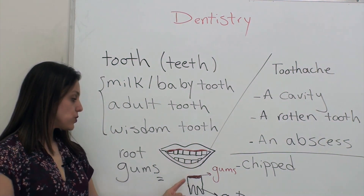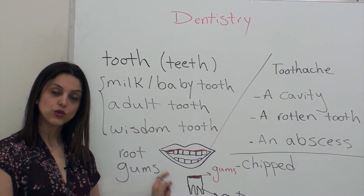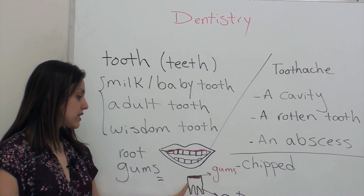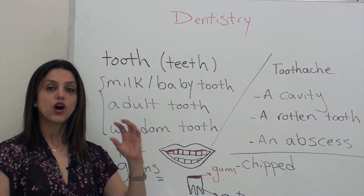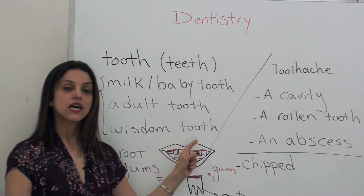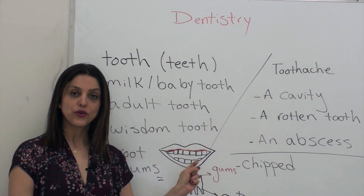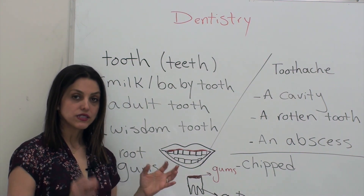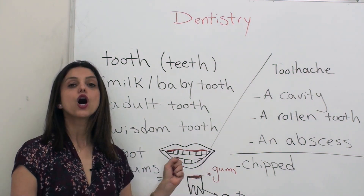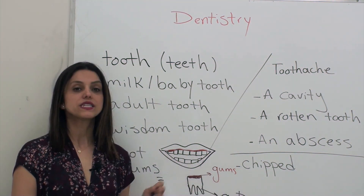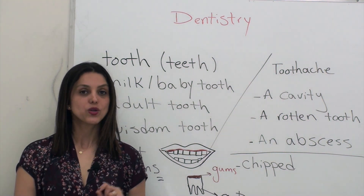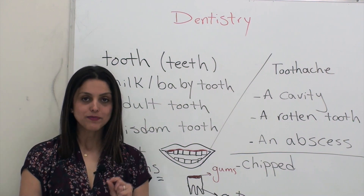All your teeth have roots. And of course, they're all connected to your gum — that pink part in your mouth that keeps all your teeth together. You call it 'gums.' Be careful — you always use it as plural. You never say 'gum,' you have to say 'gums.'